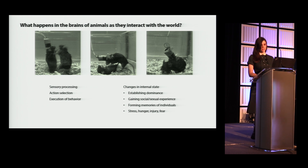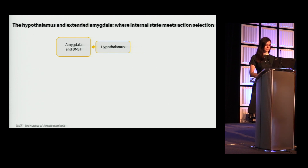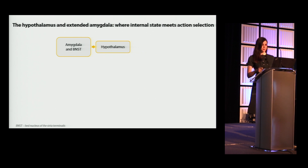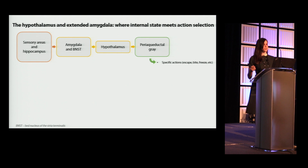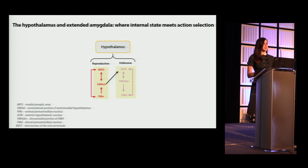The Anderson Lab is interested in addressing this question in the hypothalamus, which doesn't get a lot of show time at Cosyne. This is a deep brain structure composed of a series of nuclei involved in innate survival behaviors. The hypothalamus and its inputs in the amygdala and BNST receive input from sensory cortices and hippocampus, and send projections mostly to the periaqueductal gray, or PAG. The PAG contains motor populations for specific behaviors like escape, biting, or freezing — and the hypothalamus performs a decision-making process that preferentially biases different PAG populations.